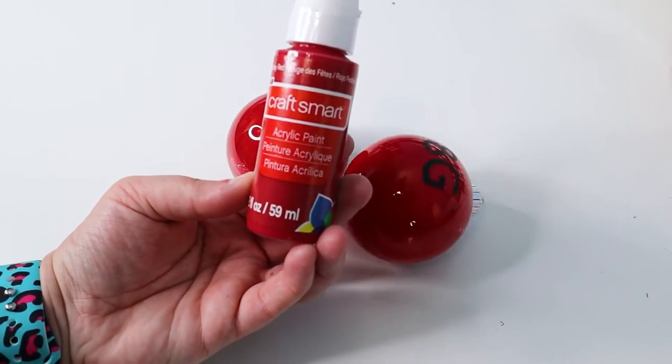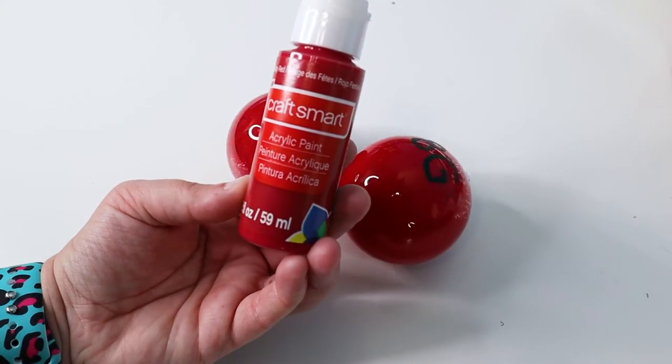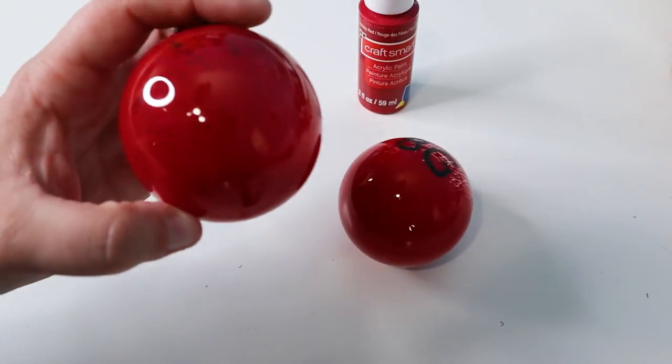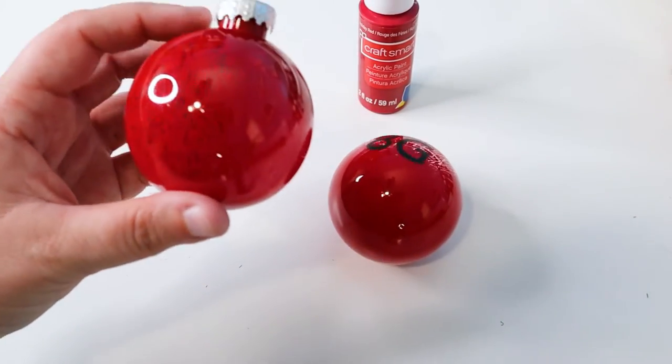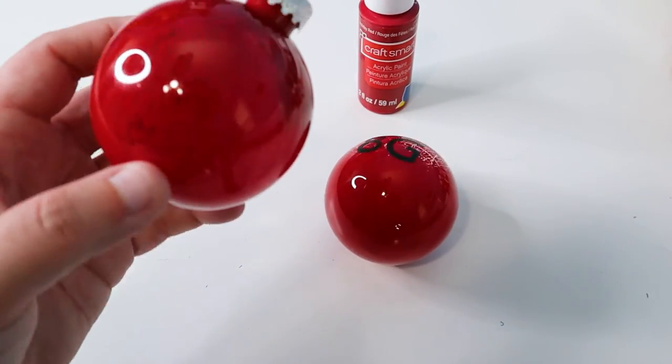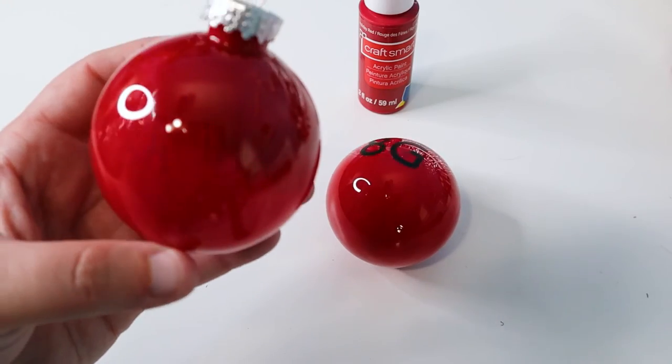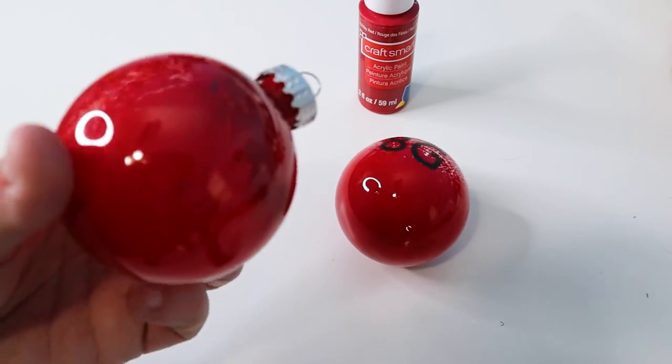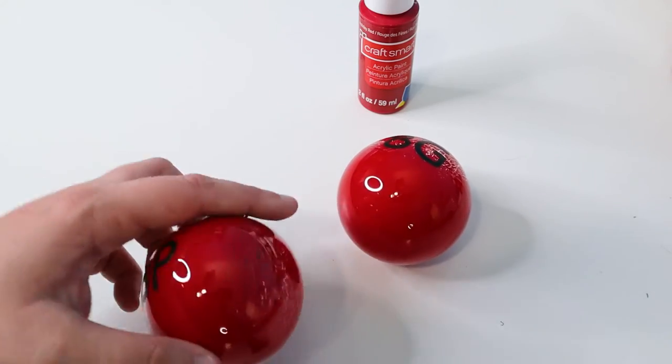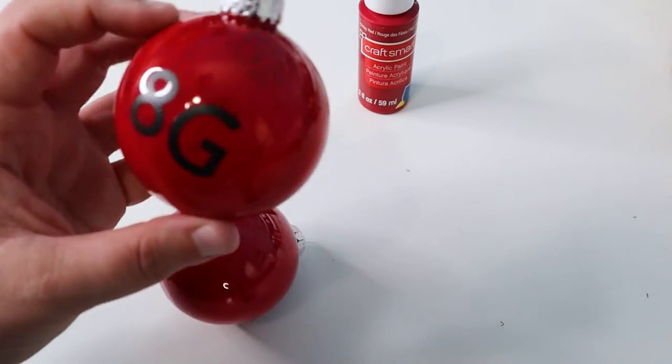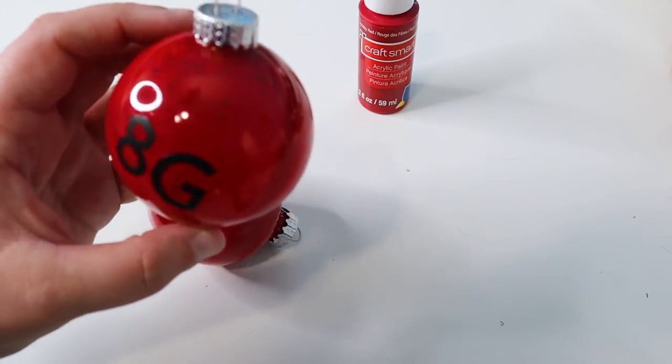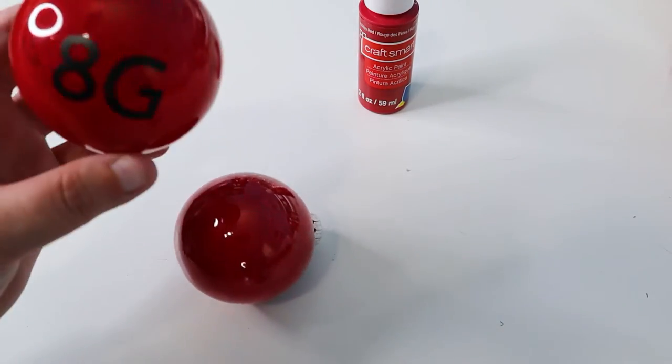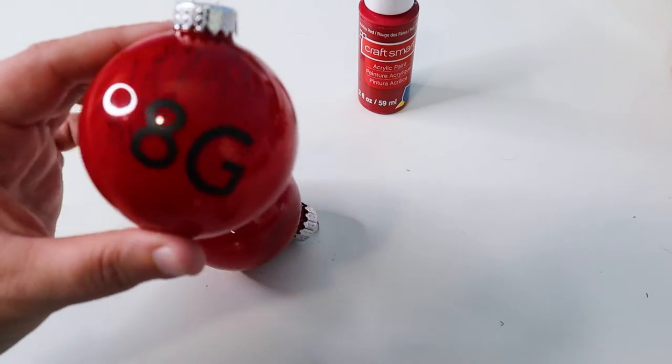Number eight is Craft Smart acrylic paint in the color holiday red. This one we've got plastic and glass. The plastic is really bad. You can see all the cracking in the paint. It really did not adhere to the glass. You can see where all the paint pooled there at the top when it was sitting. Definitely not very good on the plastic. And the glass is just as bad where it's got all that cracking looking paint. It's just not a good coverage and it really didn't hold up.